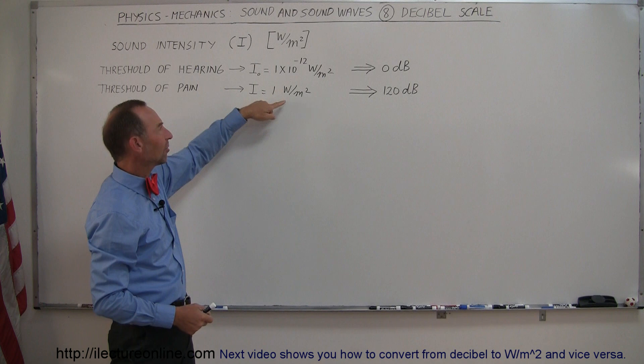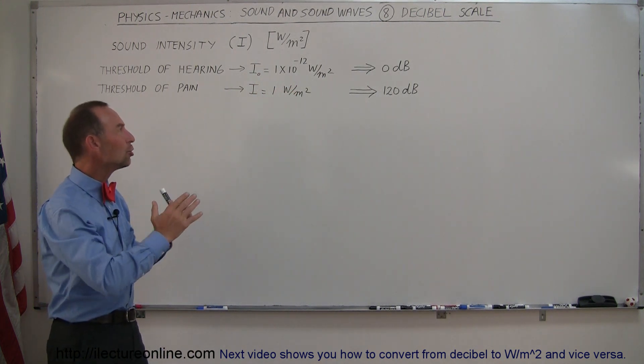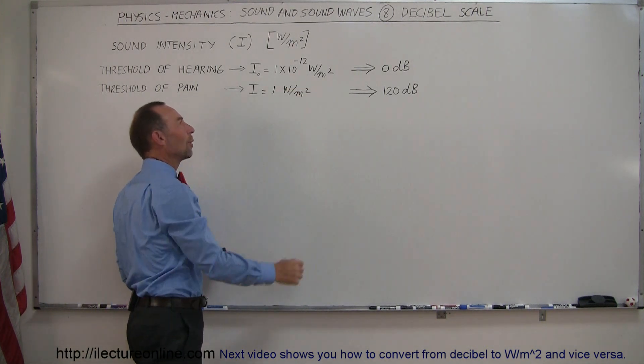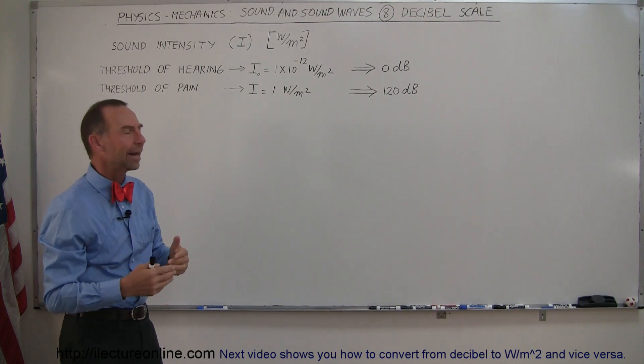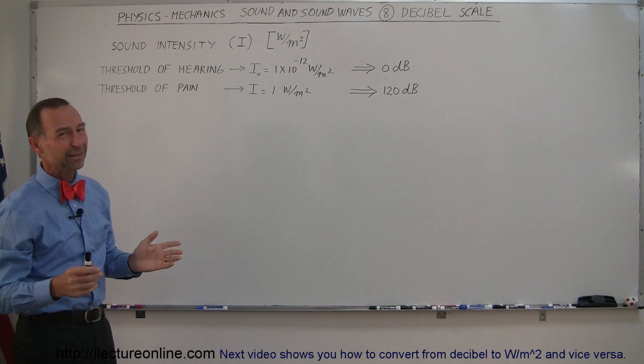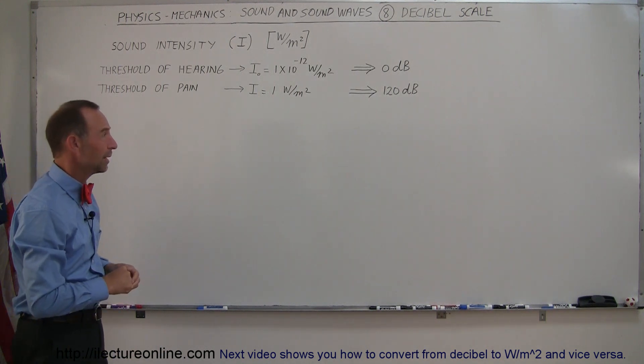So notice the difference between those two—that's a trillion to one. We can hear sound intensities that have a huge range of intensity, all the way down to one trillionth of a watt per square meter, all the way up to a whole watt per square meter, and even beyond that. When we start hearing sounds that are more intense than 1 watt per square meter, hearing damage could result, especially when it goes up to 10 or 100 watts per square meter.